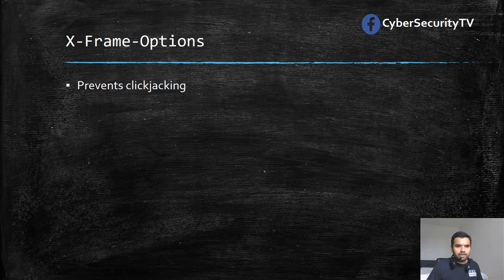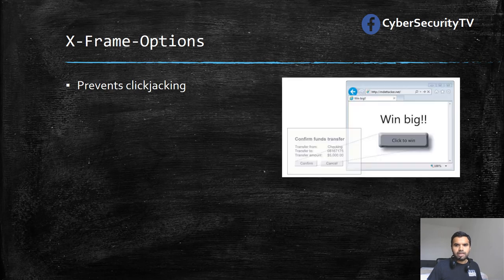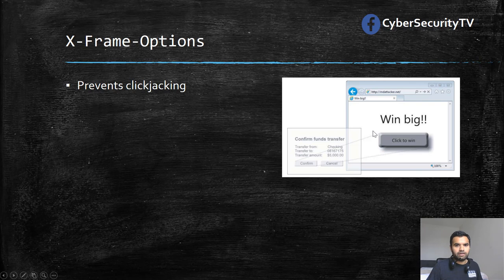So the X-Frame-Options header — how does it help? It prevents clickjacking. Clickjacking is the practice of tricking the user into clicking on a link or button that is other than what the user thinks it is. As we can see in this example, the user would see something like a 'click to win' button, but in the background there's a page that says something like 'transfer funds from this account to this account.'